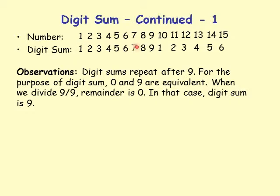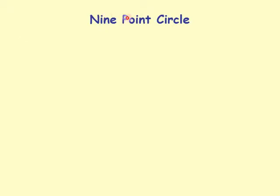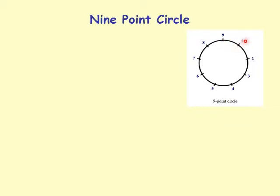Each period contains the numbers 1 through 9 in sequence. Also note that 0 and 9 are equivalent: if you divide 9 by 9, the remainder is 0, but the digit sum is 9. Number 10 also has remainder 1 and digit sum 1, confirming the repeating pattern.